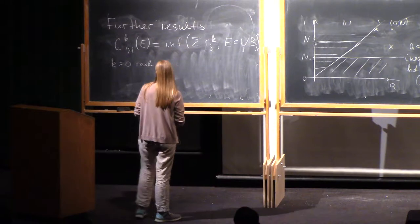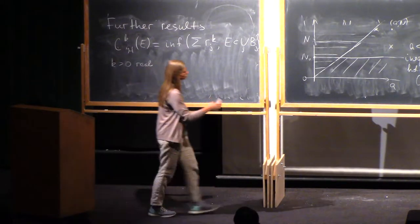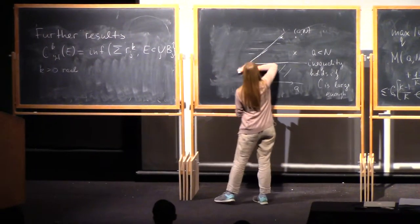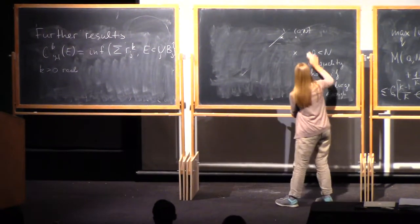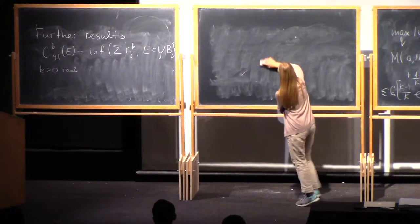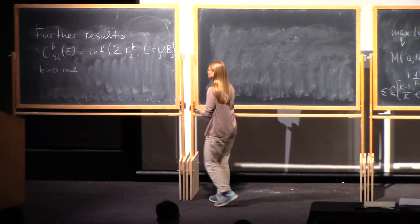So, instead of propagating smallness from sets of positive measure, what we can do is to propagate from sets of dimension larger than d minus 1.